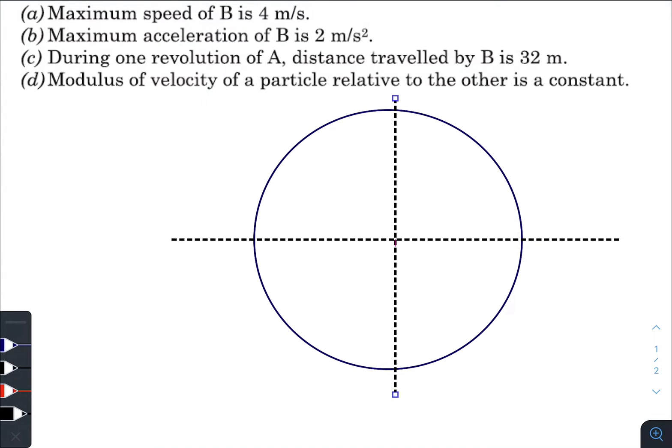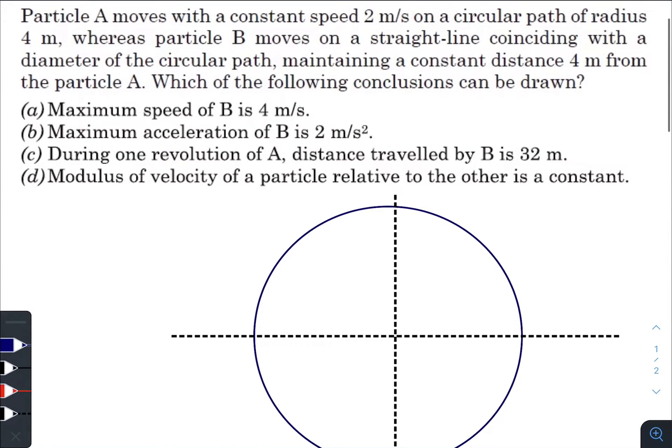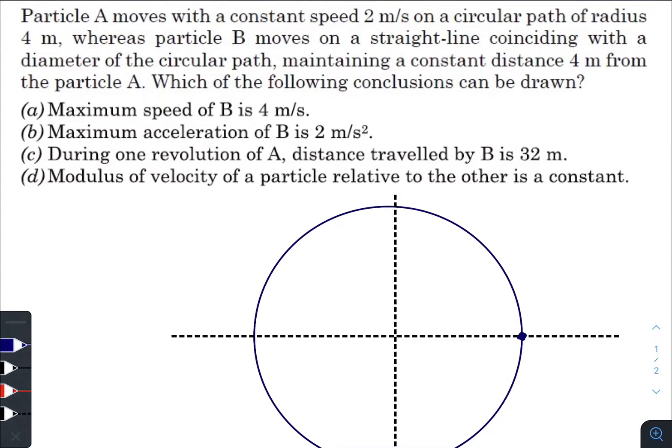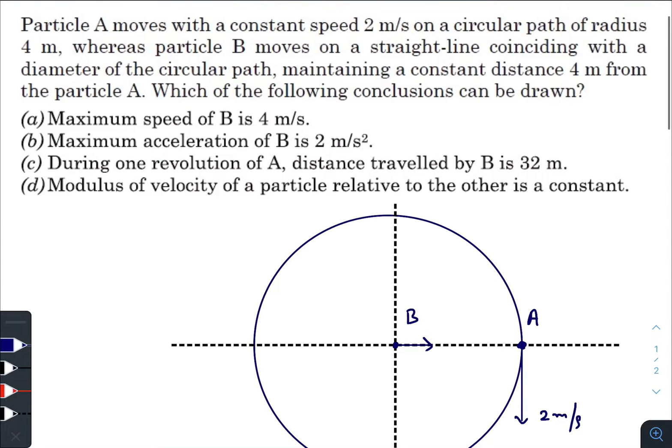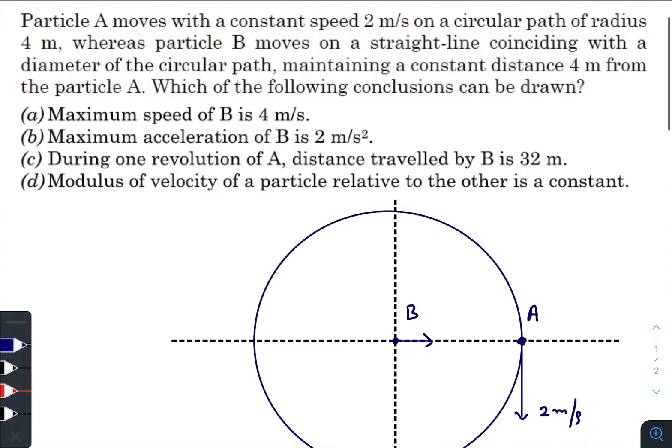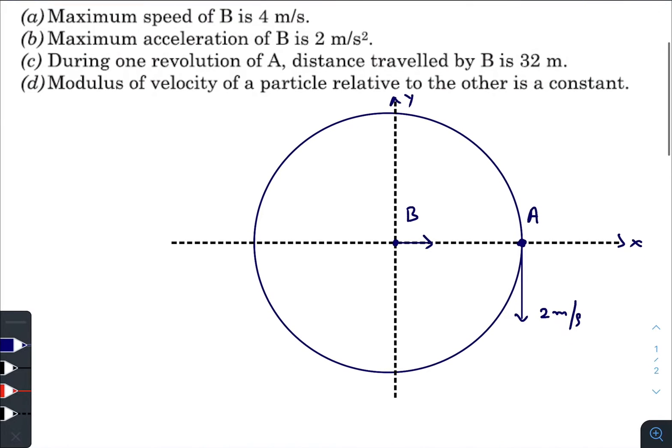Initially, let me consider that Particle A is here with speed 2 m/s. Right at this instant, the position of Particle B is here, and I don't know what is the speed of Particle B. This is our x-axis, this is our y-axis.